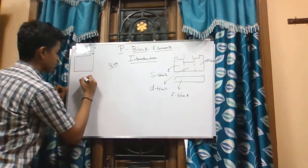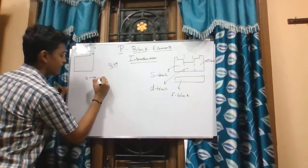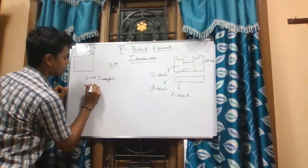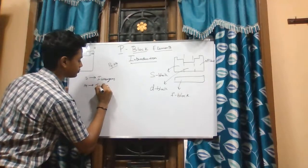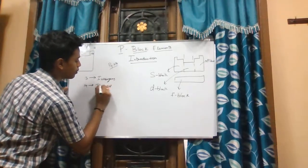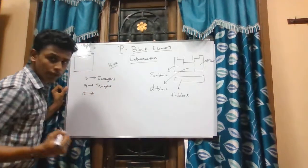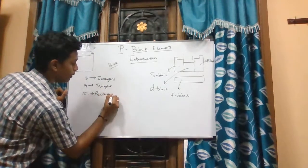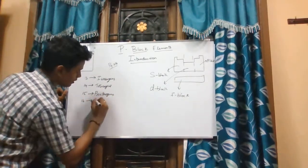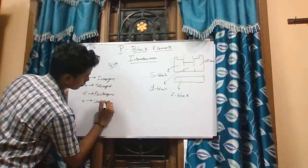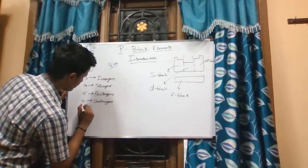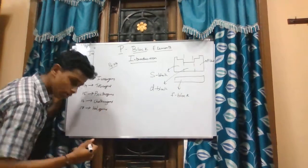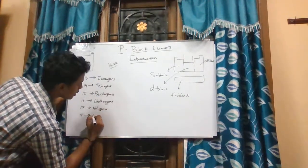The 13th group elements are known as icosagines, the 14th group elements are known as tetragines, the 15th group elements are known as nitrogines, the 16th group elements are chalcogens, the 17th group elements are known as halogens, and the last group — the 18th group — are the inert gases.